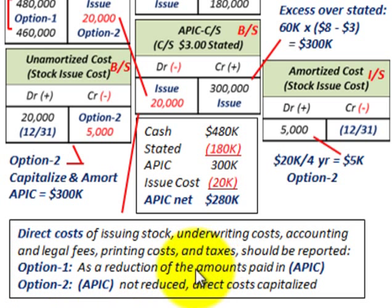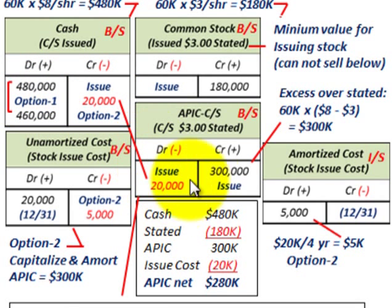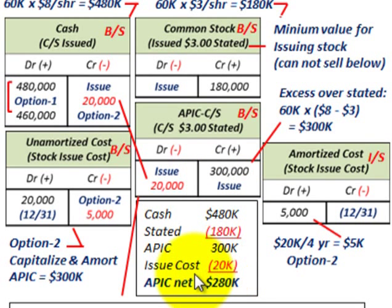Option one: treat the issue costs as a reduction to additional paid-in capital. We debit additional paid-in capital for $20,000 and credit cash for $20,000. Looking at our additional paid-in capital in option one: cash received of $480,000 less the stated amount of $180,000 gives us $300,000 of additional paid-in capital, and then less the issue costs of $20,000 gives a net additional paid-in capital of $280,000.